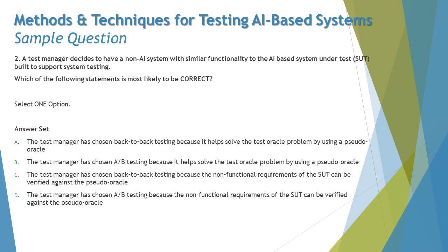Option A says the test manager has chosen back-to-back testing because it helps solve the test oracle problem by using a pseudo oracle. That is one of the most appropriate statements with respect to the question given, because we are keeping one system as a reference and using it to derive test cases. We use back-to-back testing when we have test oracle issues — when we don't have information to derive expected results — and we use a similar application as the oracle for the new system.